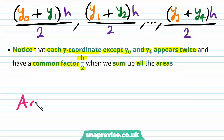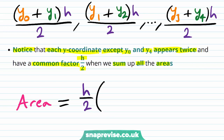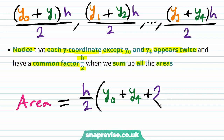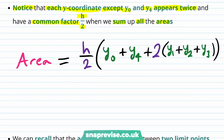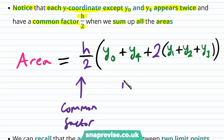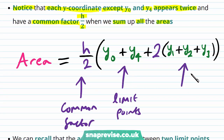We have that the total area equals the common factor h over 2, multiplied by the sum. y0 and y4 only appear once, so we have y0 plus y4, and then plus two lots of the terms that appear twice. y1 appears twice, y2 appears twice in the term y2 plus y3, and hence y3 also appears twice. So we have y0 plus y4 plus two lots of (y1 plus y2 plus y3). This common factor and these middle terms allow us to generalise the rule.